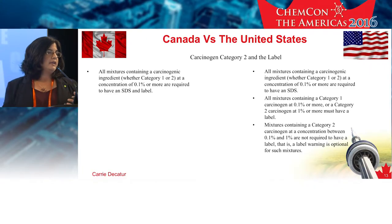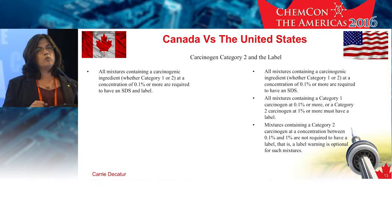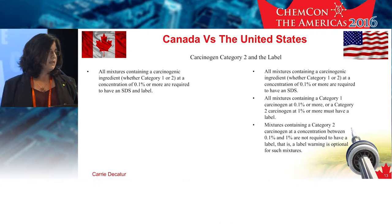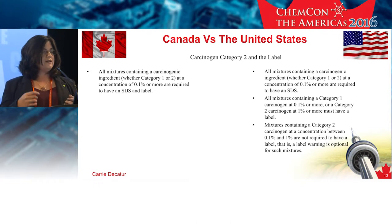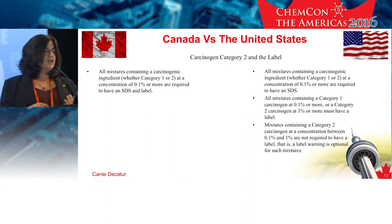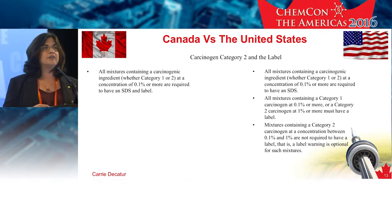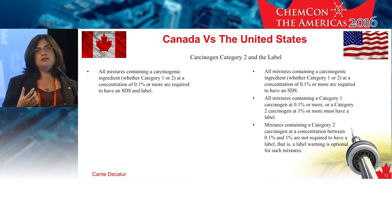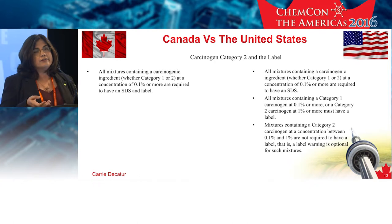For carcinogen category two and the label for Canada, if you've got a category one or two carcinogen, you have to have that on the label if it's above 0.1% — both label and SDS. In the U.S., it's a little bit different. For a category two that's between 0.1% and 1%, you're not required to have a label — that's optional. So if you're going to be sending one label between Canada and the U.S., you may have to do more in the U.S. than you might like, because you'll have to meet the Canadian regulations.